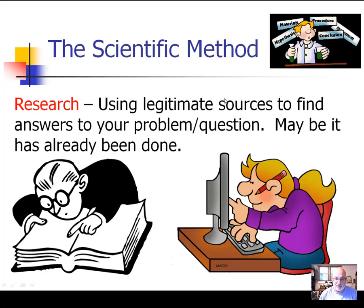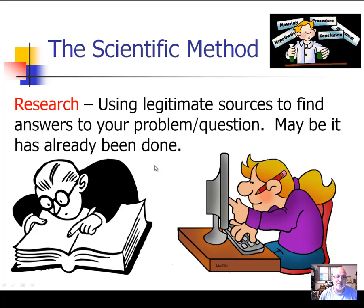Use legitimate sources. I'm throwing that in there because Wikipedia is probably not the most legitimate — it can be edited by anybody, and what you've heard on the internet does not have to be true. You can go to a written source and actually read the text. Then you can research your problem or question — it may already be done; somebody may have already proved it or found the answer. In that case, you may want to go back and think about your question more and fine-tune it in a different direction if you really do want to experiment on it.